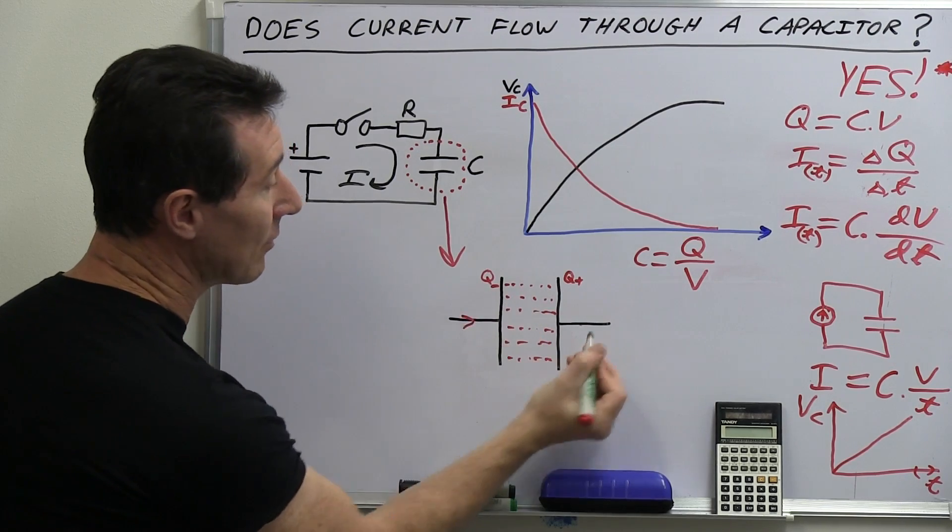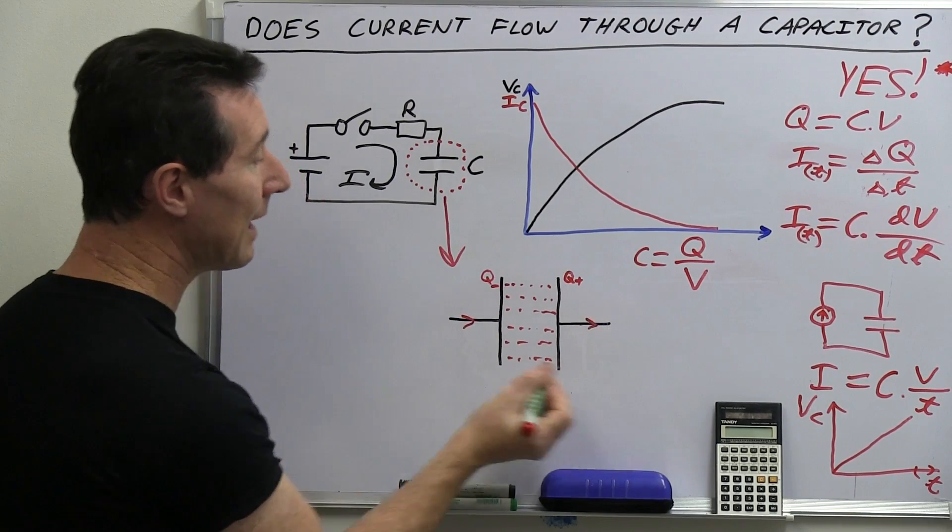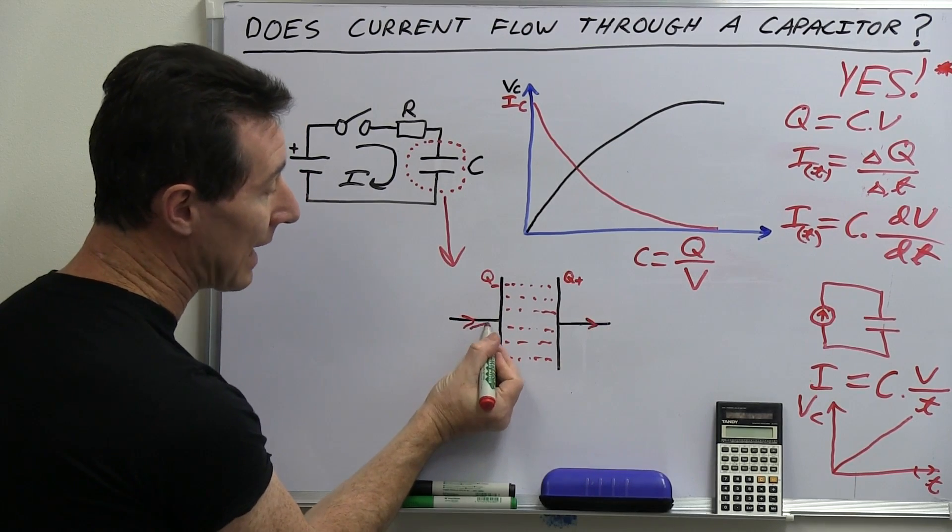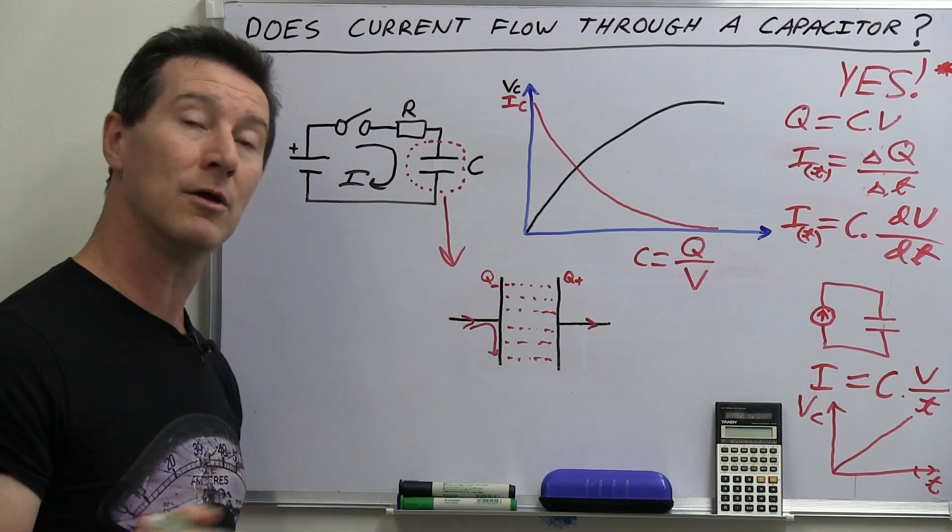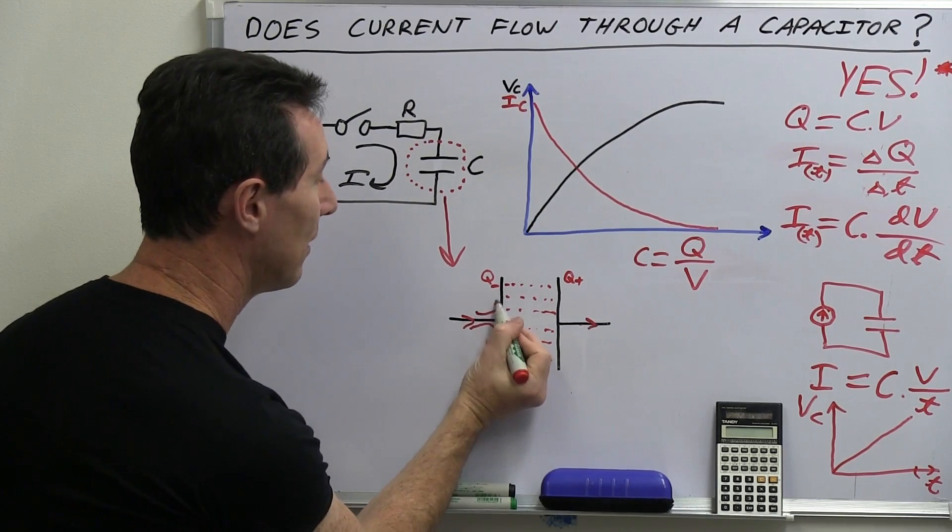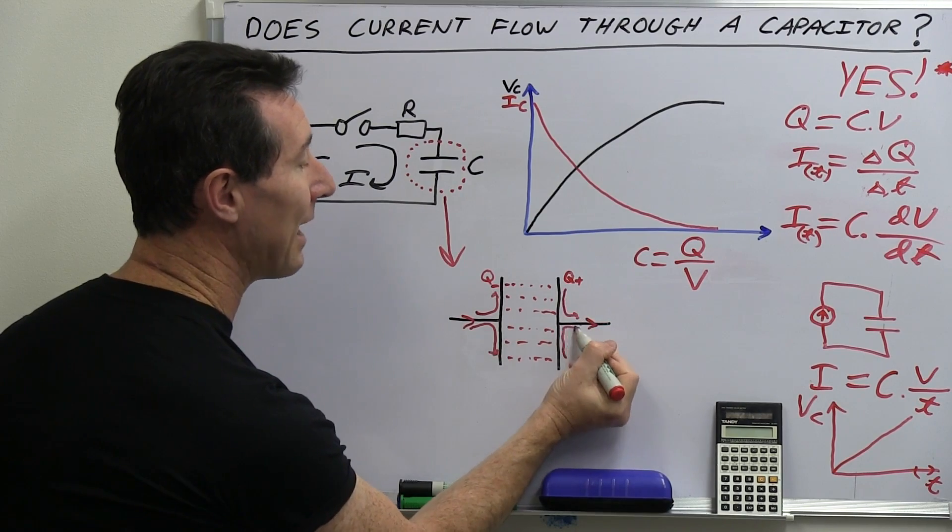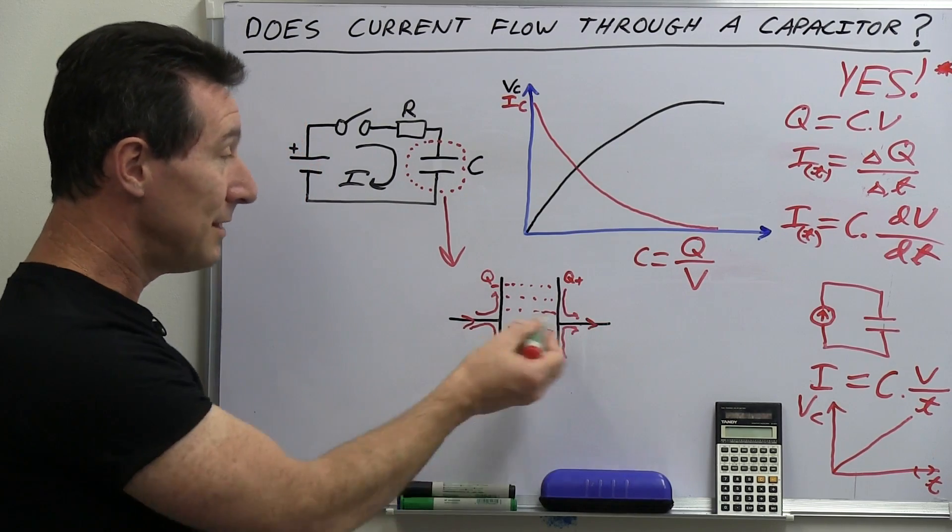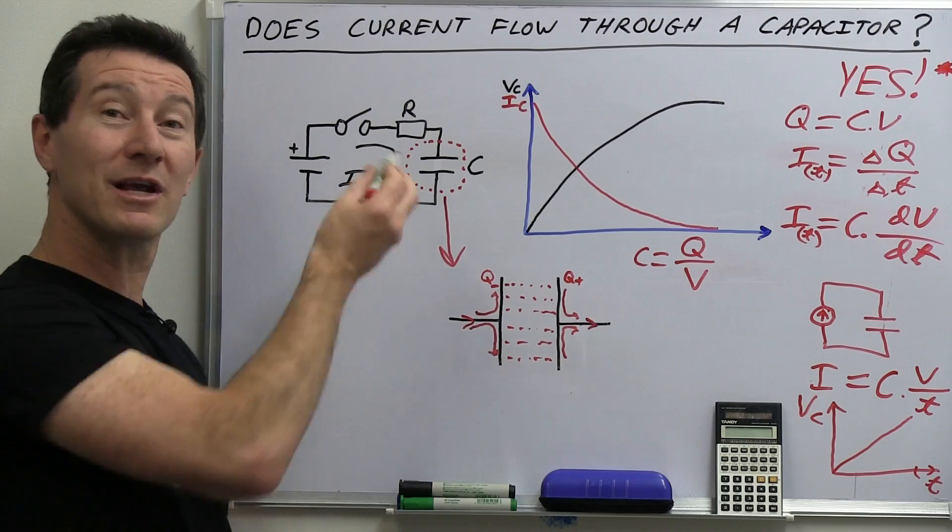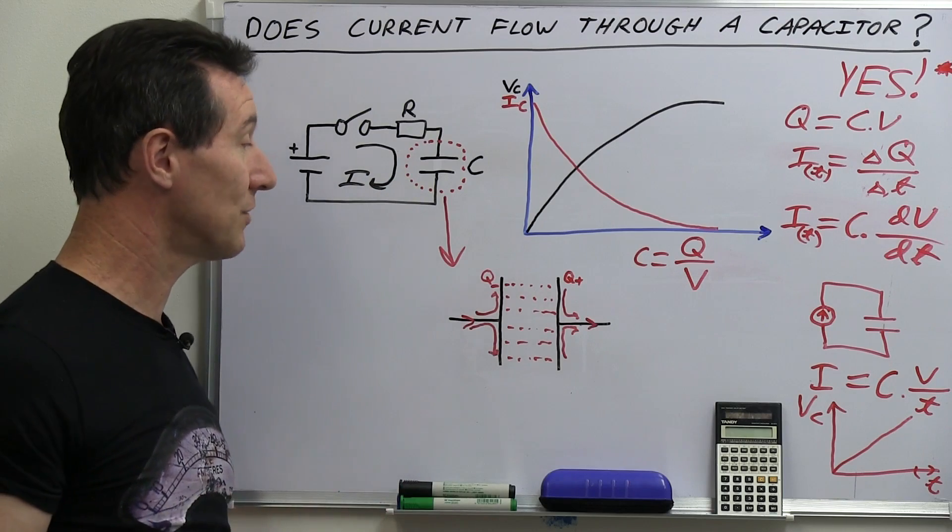Yes, we've got current flowing into and out of the wire, for example, and current can flow down these plates because they're actually metal. You can get electron flow up and down these plates like this. But nothing can go through the middle. It's like a switch. It's open. No electrons can flow.